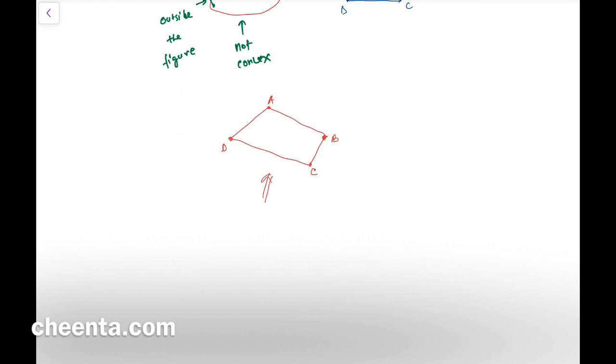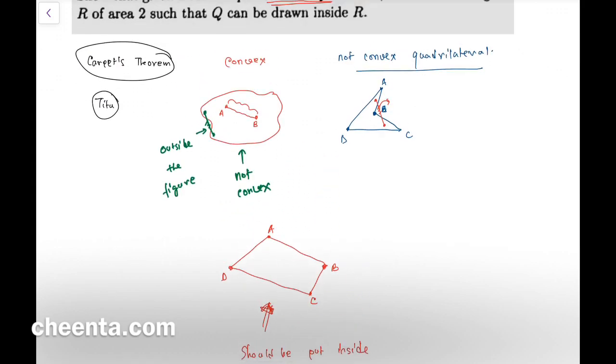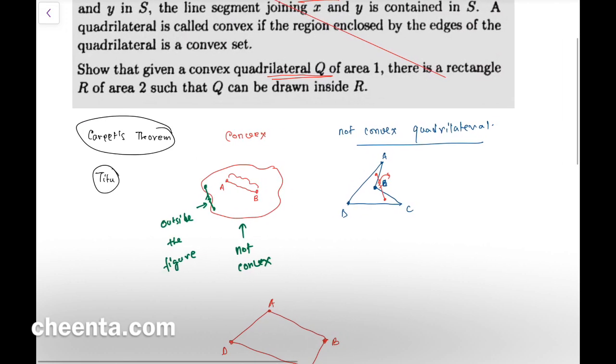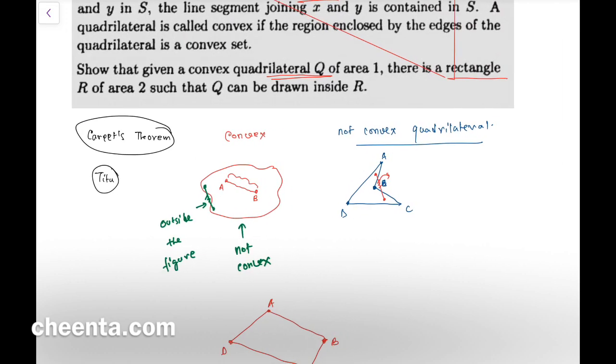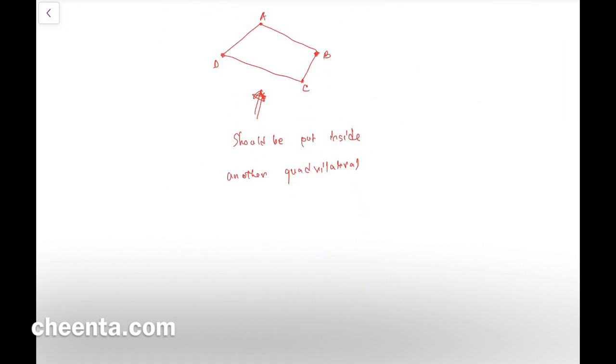We want to enclose this quadrilateral ABCD within another quadrilateral of area two. So this quadrilateral should be put inside another one—another quadrilateral. In fact, this has to be a rectangle. So it's a rectangle of area two, and this one is given to be of area one.